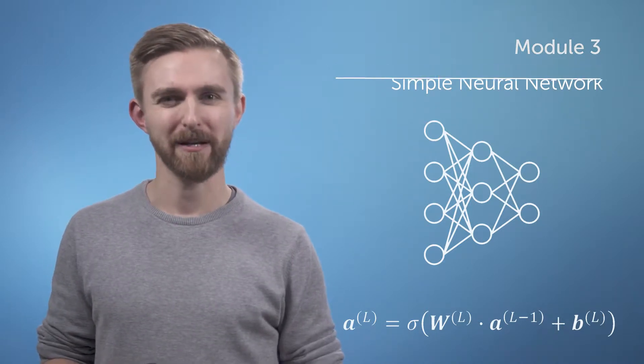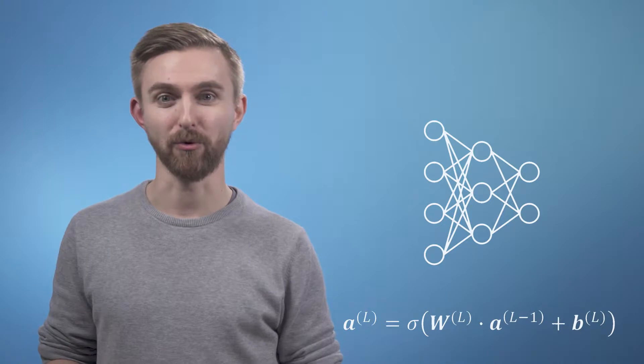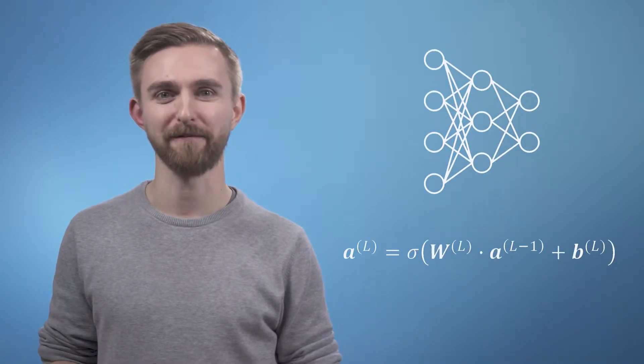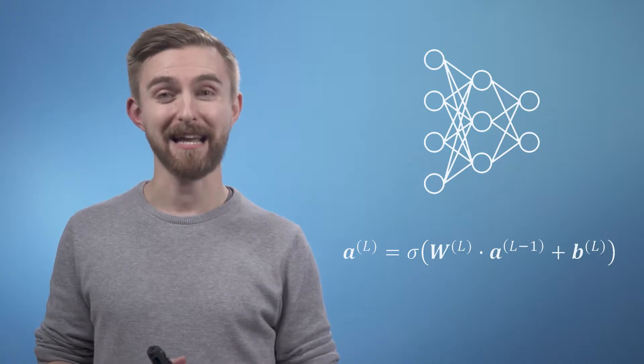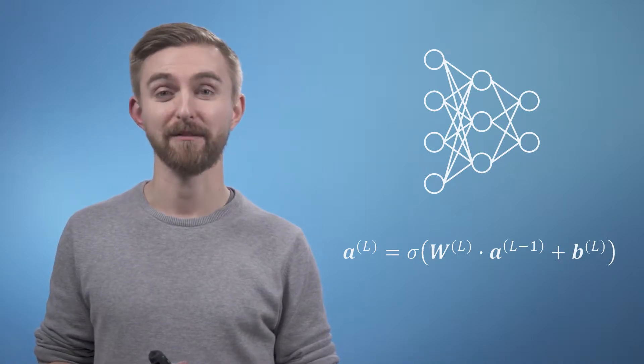In this video we're going to see how the multivariate chain rule will enable us to iteratively update the values of all the weights and biases such that the network learns to classify input data based on a set of training examples.